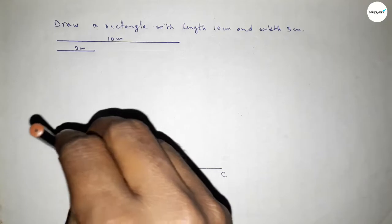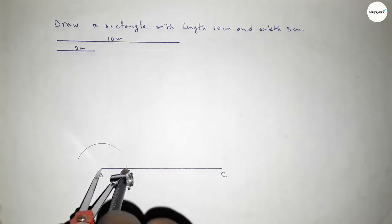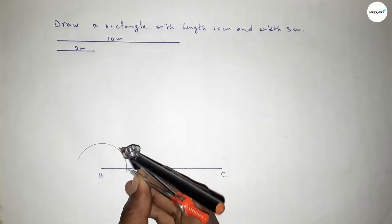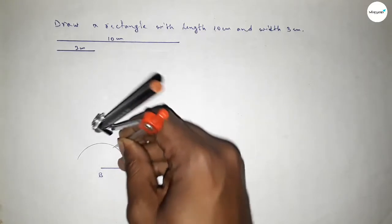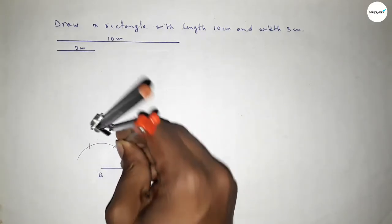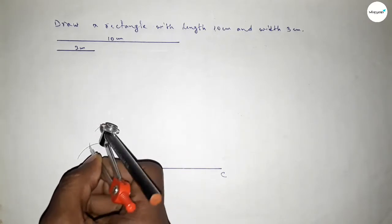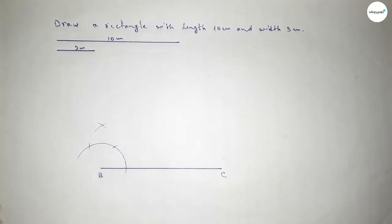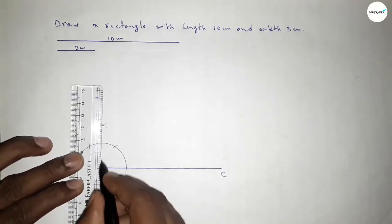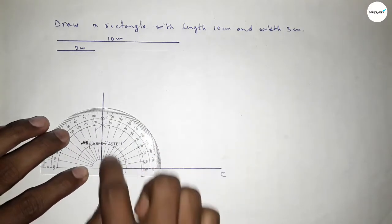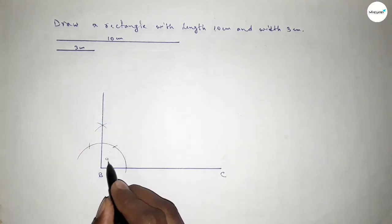Putting the compass on point B and drawing an arc. Then putting the compass at the arc intersection points and taking cuts, drawing arcs again with the same length so both curves intersect at a point. Joining this side to get a 90 degree angle. Checking — this is perfectly 90 degrees.